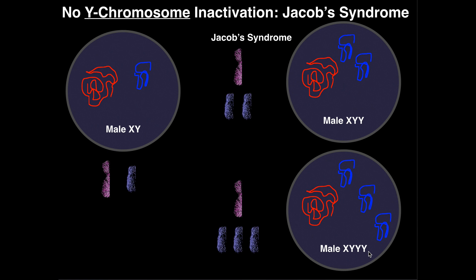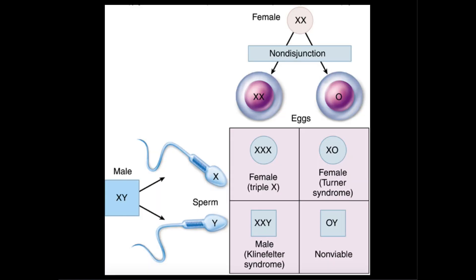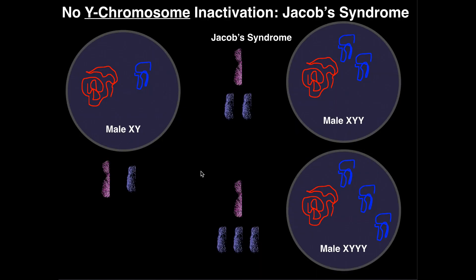What I mean by that is: if we compare the X chromosome, we understand that the X chromosome is absolutely necessary for life. If you had a genotype of just Y and no X chromosome, that organism is not even viable. The X chromosome is necessary for life. Also, the X chromosome is much larger in comparison to the Y chromosome — it has a lot more genes on it, and a lot of those genes are very important for general cellular processes. So the X chromosome has a lot of important stuff on it; you have to have at least one or you're not viable.